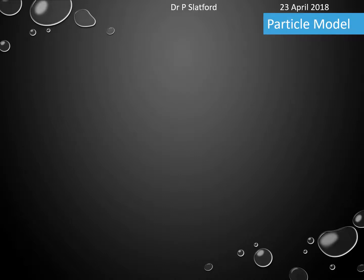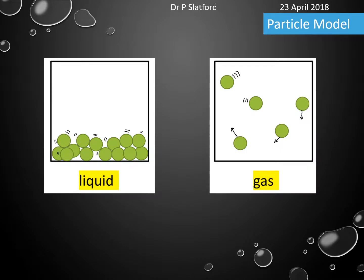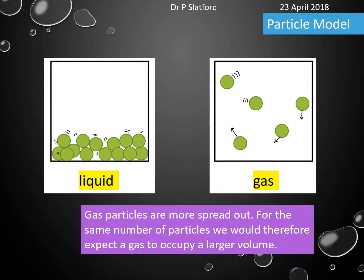Let's look at our particle model. A particle model of a liquid looks like this and the particle model of a gas looks a bit like this. Now immediately I would say that the gas particles are more spread out, and therefore if I had the same number of particles of a liquid and a gas, the gas should occupy a larger volume — and this is one of the cruxes of what we're going to talk about today.